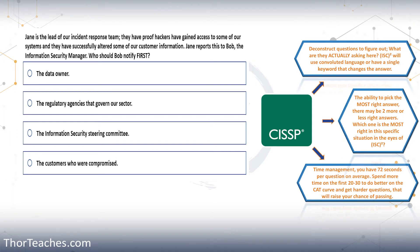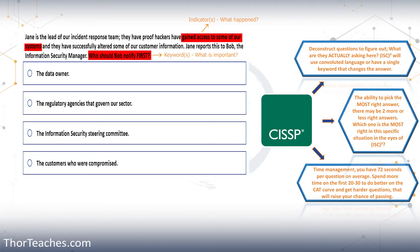Read the entire question. Take the time you need to completely read it — probably read it twice — and then deconstruct it. What are they really asking? You need to find the keywords and you need to find the indicators. Indicators are words like most, best, least, can, always. Keywords tell you what the question is actually about — PKI, self-directed, or something like that. When I say deconstruct, boil it down to its essence. It might be a full paragraph, but really what they're asking is the last 10 words.